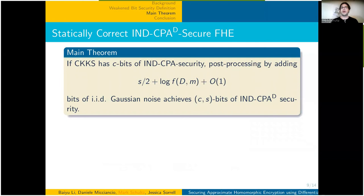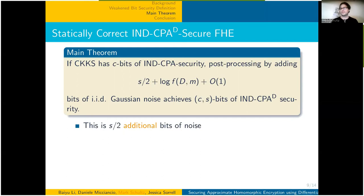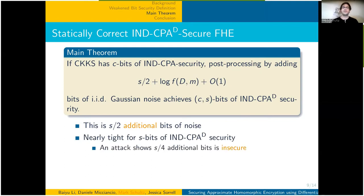Using this novel notion of concrete security, we're able to get significant gains. Our main theorem can be phrased as follows: given CKKS with C-bits of NCPA security, post-processing by adding S/2 plus the logarithm of the bound on the size of the error in the ciphertext bits of IID Gaussian noise achieves C-S-bits of NCPA security. This is S/2 additional bits of noise. It is nearly tight for S-bits of NCPA security; in particular, we have an attack showing that S/4 additional bits is insecure.